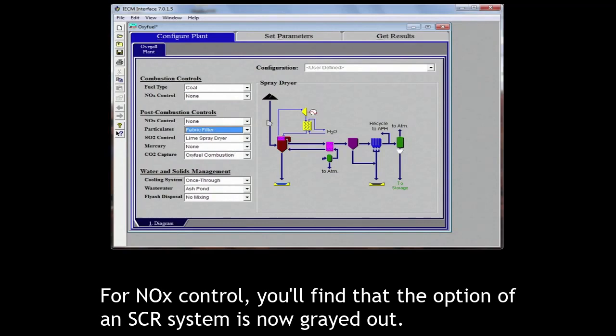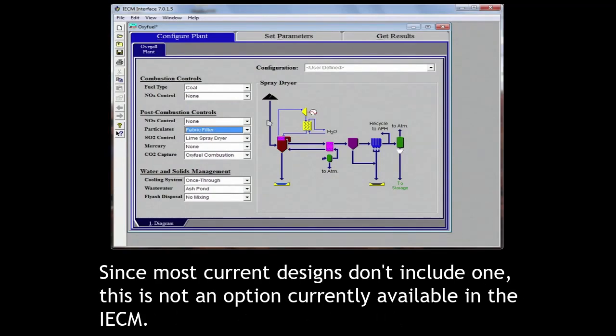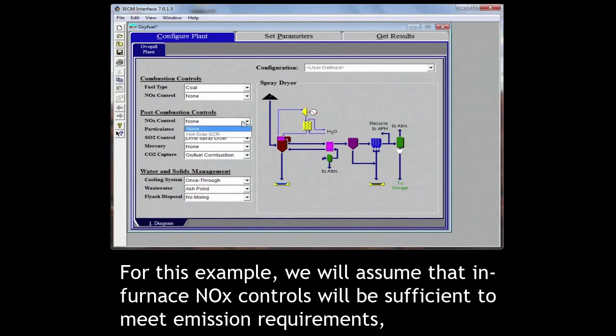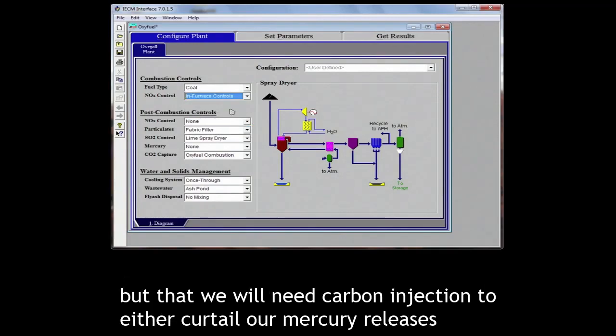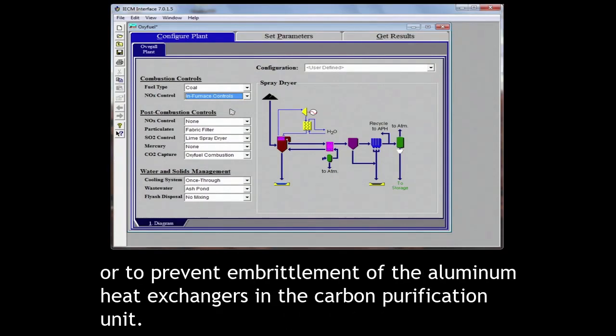For NOx control, you'll find that the option of an SCR system is now grayed out. Since most current designs don't include one, this is not an option currently available in the IACM. For this example, we will assume that in-furnace NOx controls will be sufficient to meet emission requirements, but that we will need carbon injection to either curtail our mercury releases or to prevent embrittlement of the aluminum heat exchangers in the carbon purification unit.